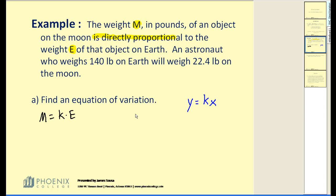Now this is our general equation but we want to find the value of k to make it the equation of variation. We can do that by using the next sentence. An astronaut who weighs 140 pounds on earth, so when e equals 140 pounds, they'll weigh 22.4 pounds on the moon, so m is equal to 22.4.